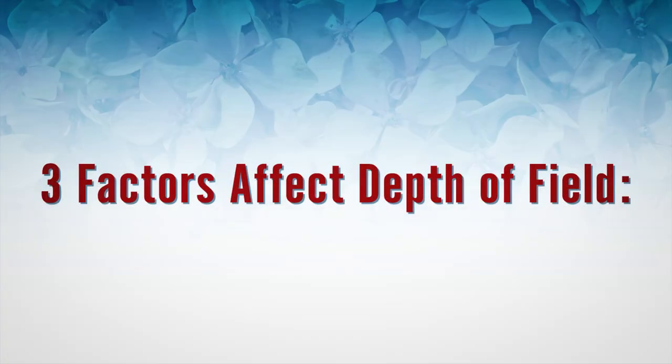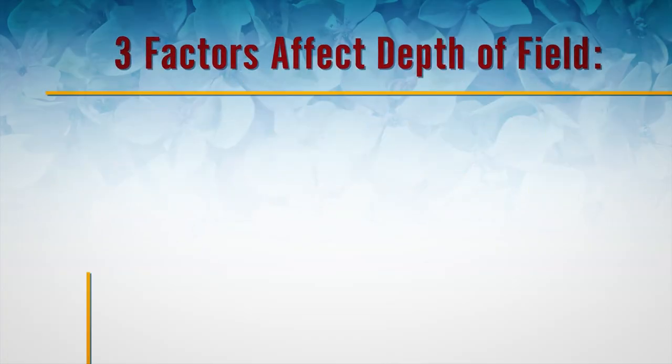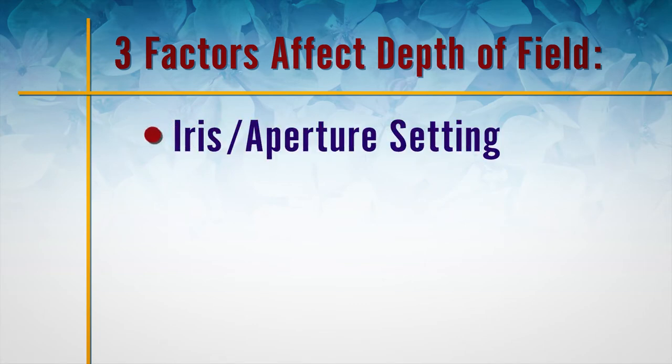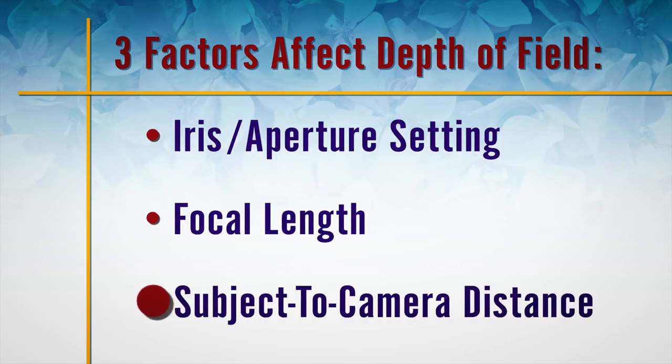There are three factors that influence depth of field. They are iris or aperture setting, focal length, and subject to camera distance. Each of these elements interacts differently with the lens and changes how the final images appear.